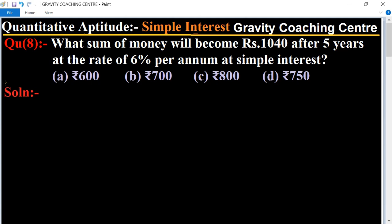Quantitative Aptitude chapter Simple Interest, question number 8: What sum of money will become rupees 1040 after 5 years at the rate of 6% per annum at simple interest?